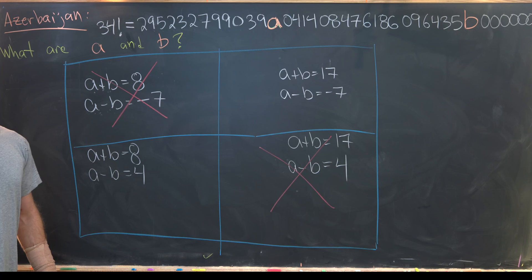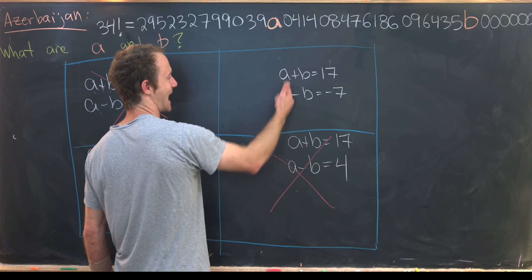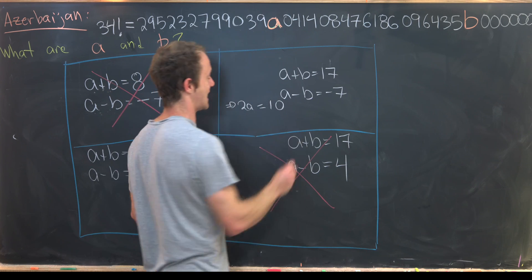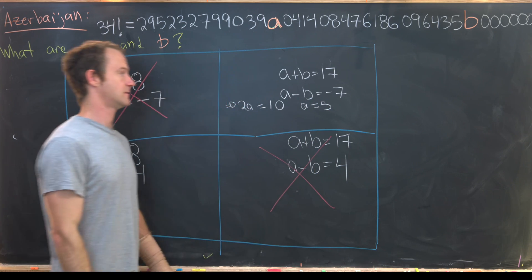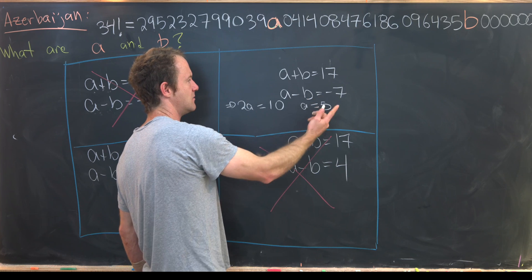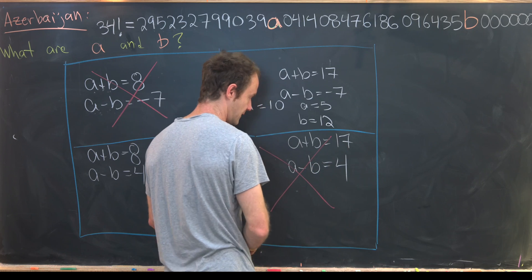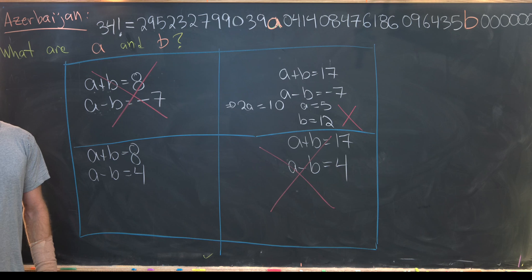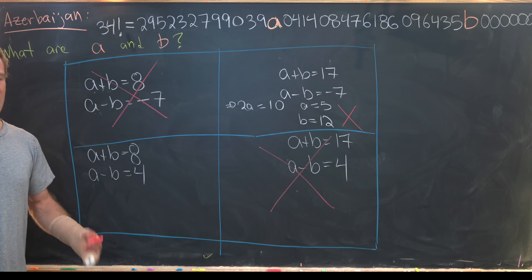And now we'll look at the remaining two cases. Now we've just got a nice system of equations to solve. So I'll start by adding these two equations. So that's going to give me 2a equals 10. In other words we'll have a equals 5. But now if we plug a equals 5 maybe back into this equation right here we'll see that b is equal to 12. So we immediately see that this possibility is also impossible. Why is that? That's because b cannot be that large.